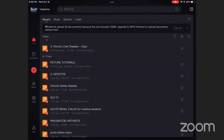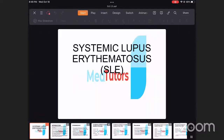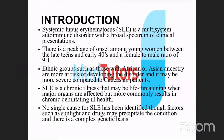We now move to discuss Systemic Lupus Erythematosus (SLE). SLE is a multi-system autoimmune disease — a prototype autoimmune disease — that affects females more than males. It requires a high index of suspicion for diagnosis.